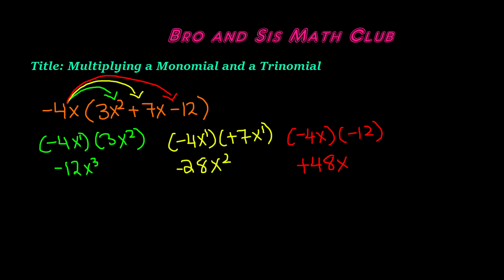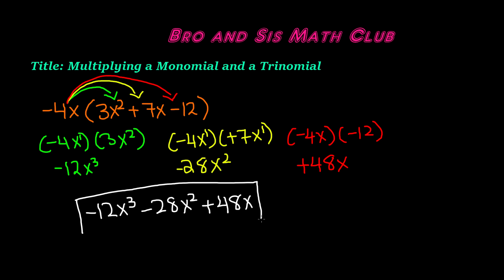At the end, we are left with our product, which is negative 12x cubed minus 28x squared plus 48x. And this is the product when you multiply negative 4x, the monomial, times the trinomial 3x squared plus 7x minus 12. That's it for this video — thank you for watching, and we will see you guys in our next video. Bye.